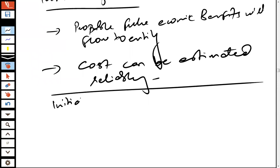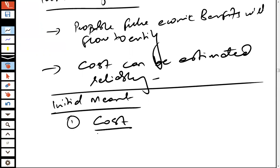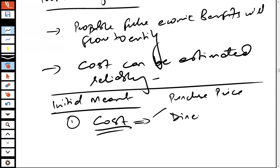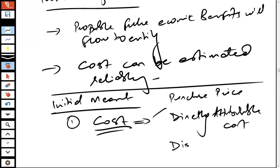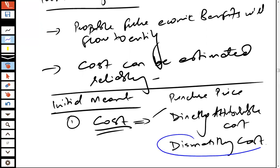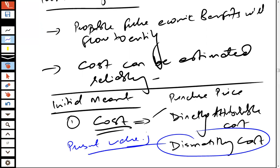The initial measurement of property, plant and equipment is at cost. The cost comprises the purchase price, plus directly attributable costs. In addition, there is the dismantling cost or site restoration cost. When it comes to dismantling and site restoration costs, these are recognized at present value.